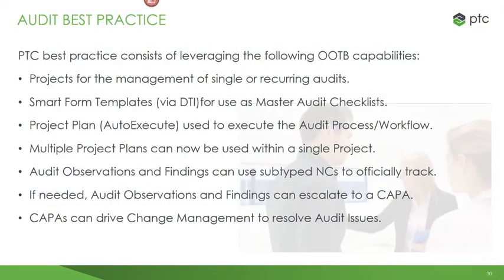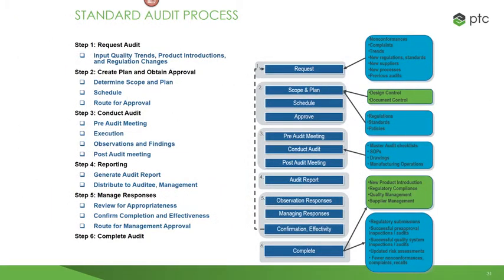PTC has developed a best practice in support of audit management, leveraging out-of-the-box capabilities: projects for management of single or recurring audits, smart forms via desktop integration for use as master audit checklists, project plans with auto-execute to run the audit process and workflow, multiple product plans within a single project, and audit observations and findings using subtype non-conformances to officially track. If needed, findings can escalate to a CAPA, which can drive change management to resolve issues. The standard audit process consists of six steps: requesting the audit, creating the plan and obtaining approval, conducting the audit, reporting, managing responses, and completing the audit.